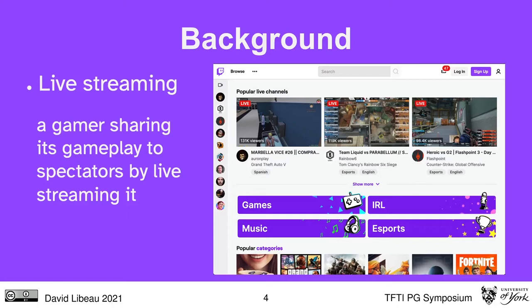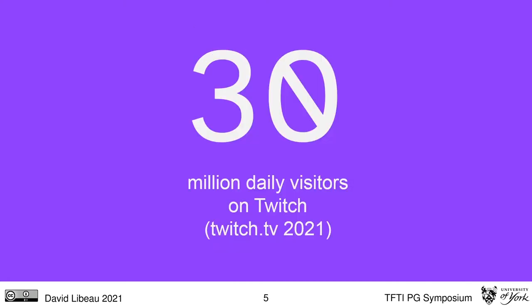So what is live streaming? Live streaming is when a player shares their gameplay to spectators by live streaming it. Twitch is one of the main platforms for live streaming, but Facebook Gaming as well as YouTube Live also compete. It's a new entertainment media that gathers millions of spectators every day, with an average of 30 million daily visitors on Twitch.